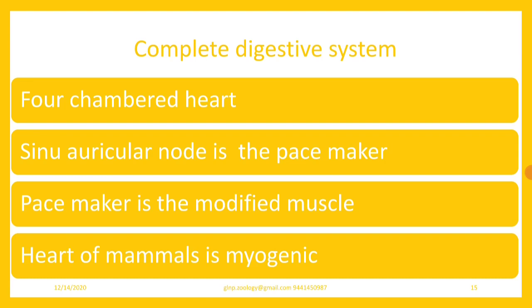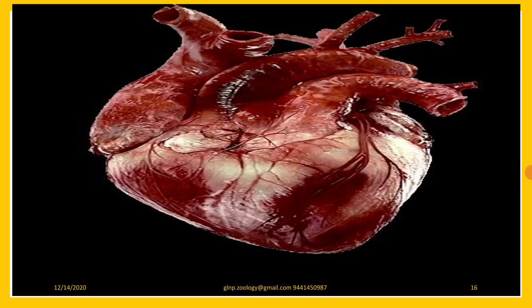The pacemaker starts the rhythm of the heartbeat. The sinoatrial node is the pacemaker, and the pacemaker is a modified muscle. Hence the heart of mammals is myogenic, just like in any vertebrate. The left aortic arch is present in all mammals.